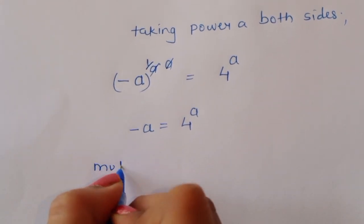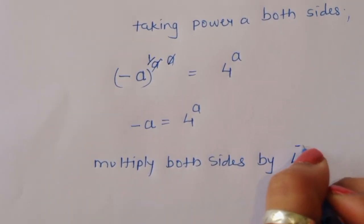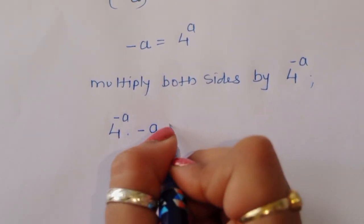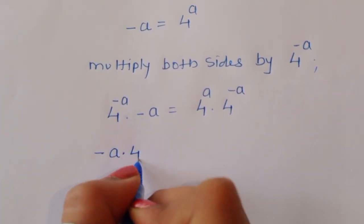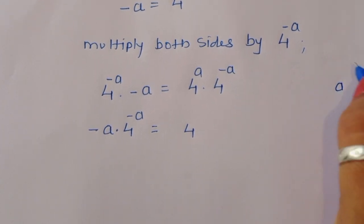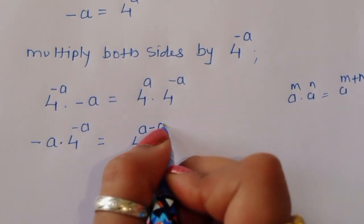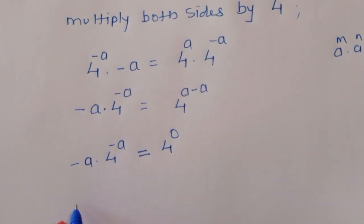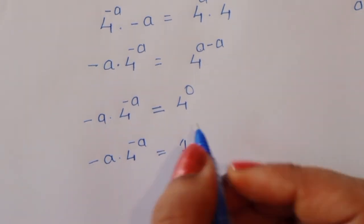Now we multiply both sides by 4 to the power minus a. Then we get 4 to the power minus a times minus a is equal to 4 to the power a times 4 to the power minus a. Using the formula a^m times a^n equals a^(m+n), we get minus a times 4 to the power minus a is equal to 4 to the power (a minus a), which is 4 to the power 0, which equals 1.